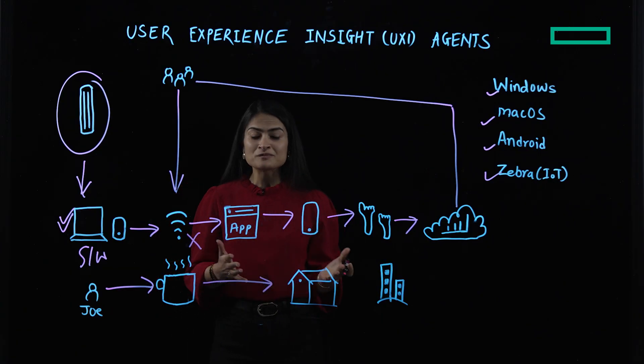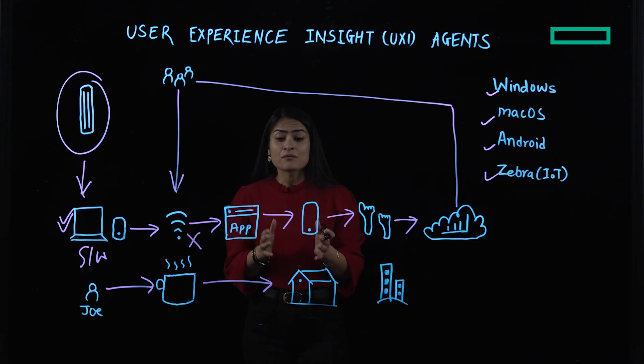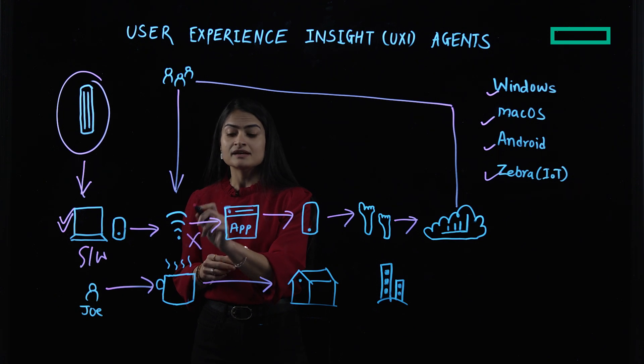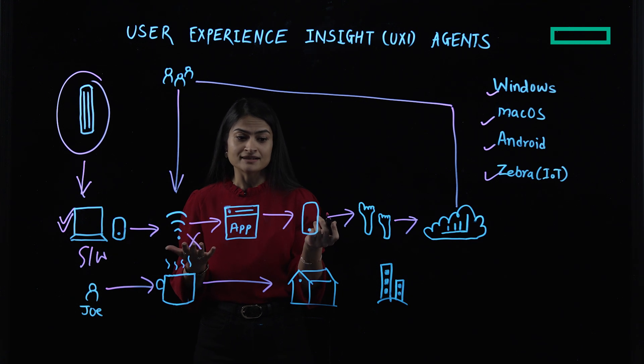Now, Joe is back home sitting in the comfort of his office chair and he's trying to run some SAP reports. But unfortunately for Joe, these technical hiccups do not end for him. But what we saw with our agent is that Joe is connected to his home network and everything is working as expected. We also checked the ERP system, which was working as expected as well.